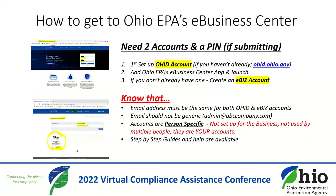How do you get into Ohio EPA's eBusiness Center? You need two accounts and a PIN if you'll be submitting documents. The first step is to set up an OHID account — this is not an Ohio EPA site; it belongs to the State of Ohio and is a completely separate system. You'll search for and add the eBusiness Center app, then launch it and open it. If you don't already have an eBus account, here's where you will create one. Nine out of ten times when people can't find another person's account, it's because that person only set up the OHID account and didn't set up their eBus account. The email address should be the same for both accounts and it shouldn't be generic. Accounts are person-specific, not set up for a business, and should not be shared or used with credentials from a previous employee.